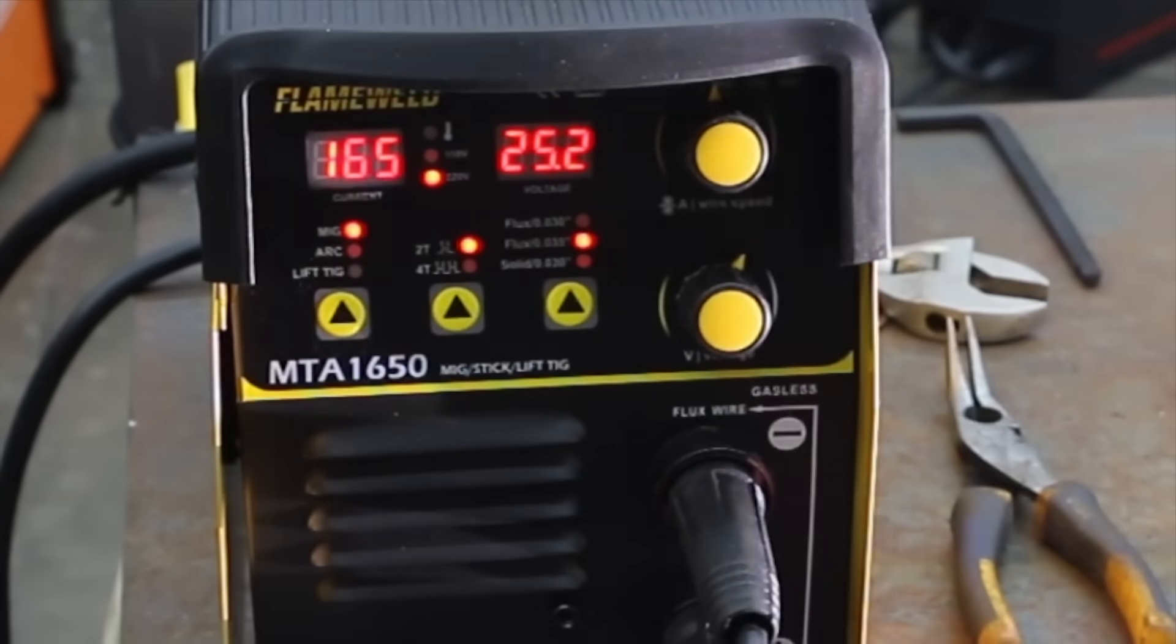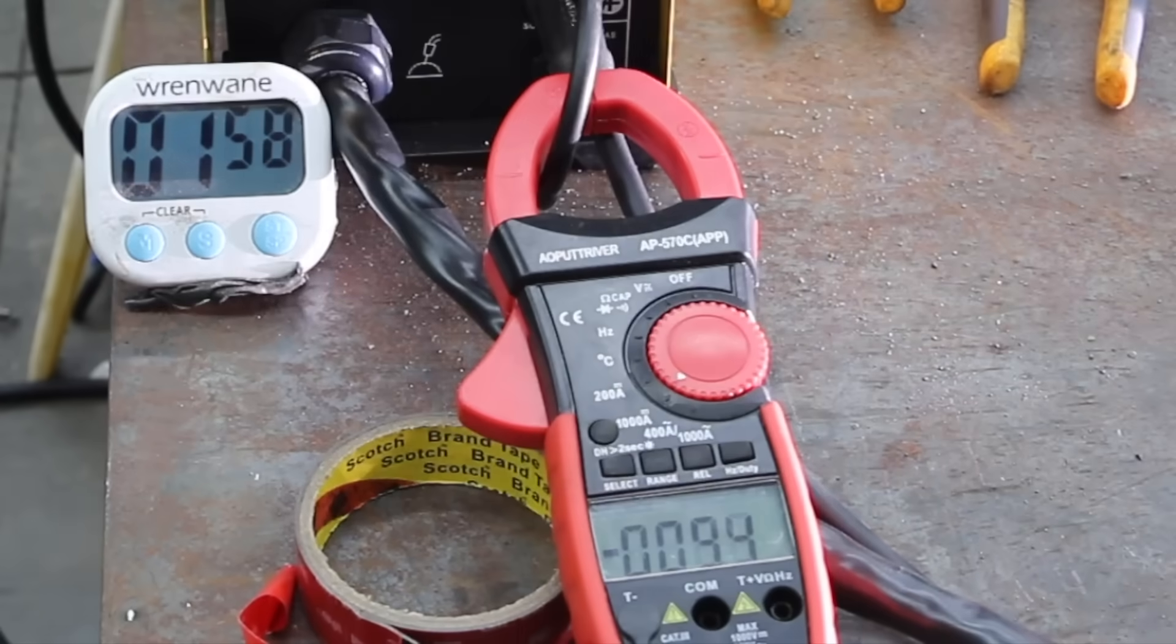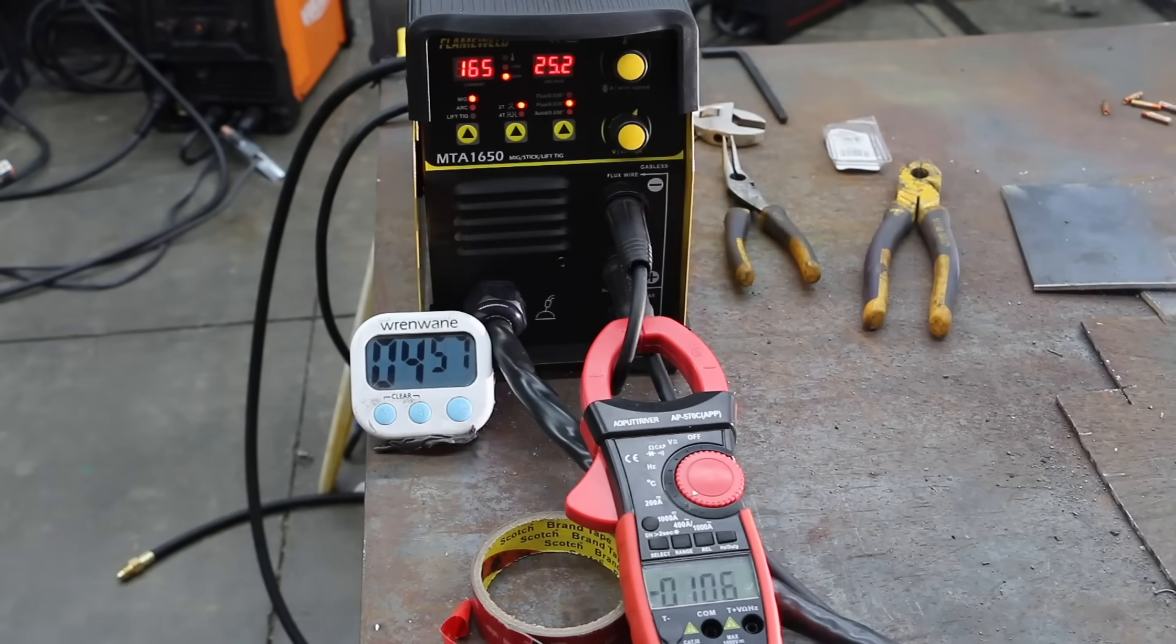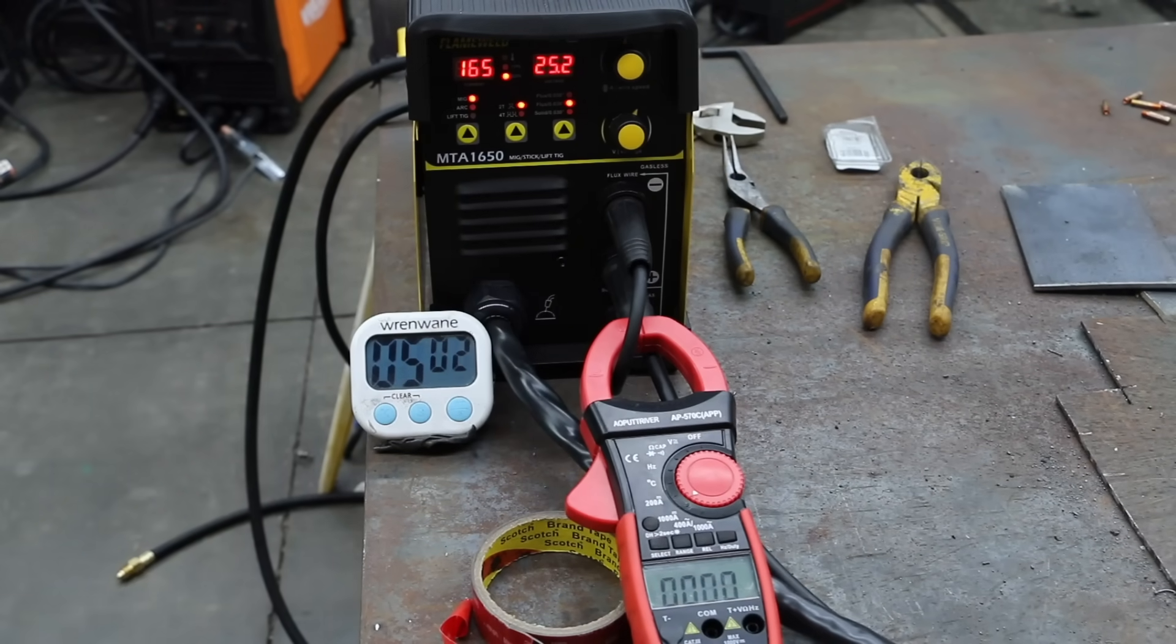In the next test, let's run the welders for five minutes as close as possible to 160 amps. We'll check for current drop during the entire five minutes. And the flame weld is set for 165 amps, but the welder is only producing 100 amps after two minutes. And the flame weld stayed around 85 amps throughout the rest of the five minutes.